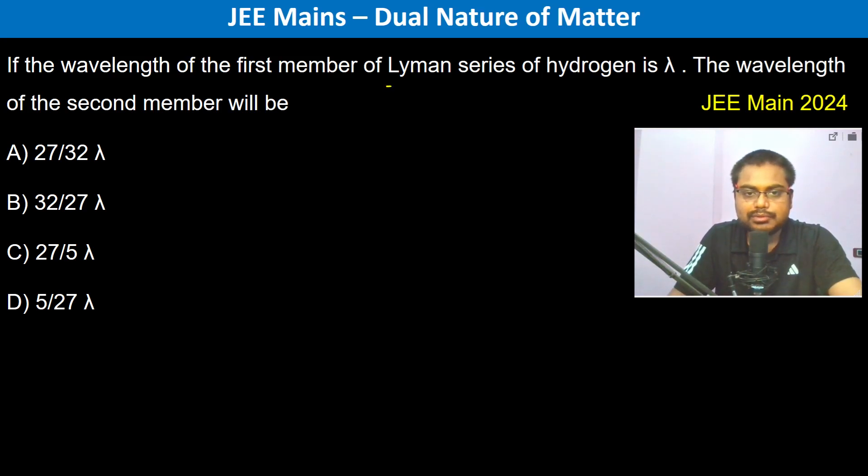If the wavelength of the first member of the Lyman series of hydrogen is λ, the wavelength of the second member will be? So what is Lyman series? Lyman series is the electrons falling to the first orbital from the higher orbitals.